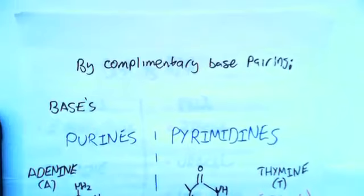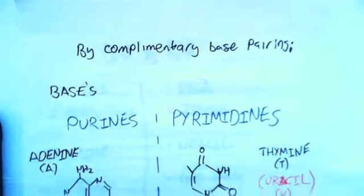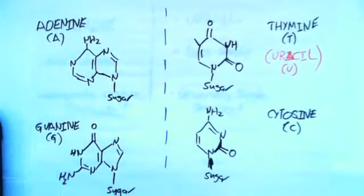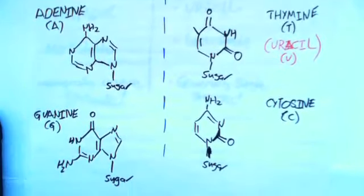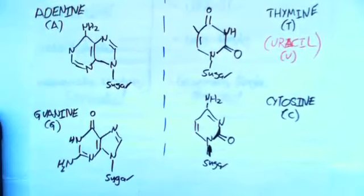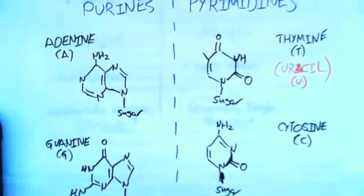The hydrogen bonding is due to complementary base pairing. There's five main bases, four of which appear in DNA. There's four in both DNA and RNA and only one of them is different between DNA and RNA.